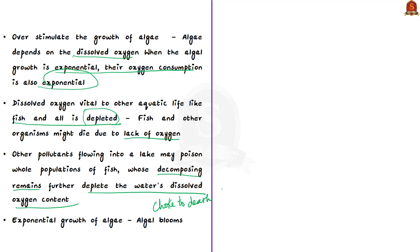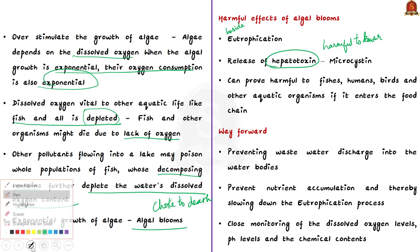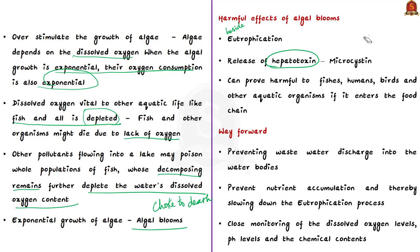This exponential growth of algae is what is called algal blooms, and that is exactly what has happened in the Muttukadu estuary. These blooms, besides causing eutrophication, are also harmful at another level — they release hepatotoxin, which is harmful to the liver. The article mentions the hepatotoxin here is microcystin, which can prove harmful to fish, humans, birds, and other aquatic organisms if it enters the food chain.